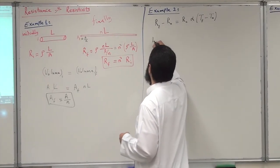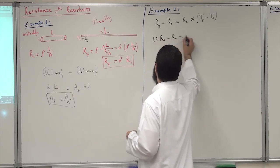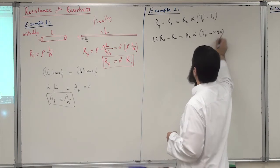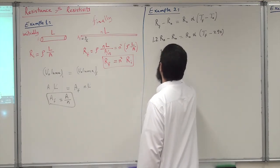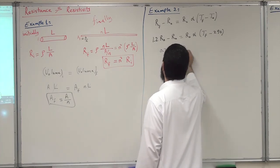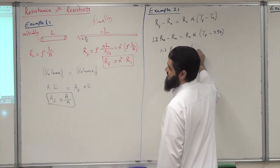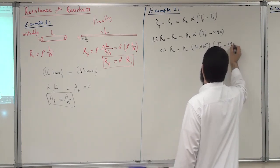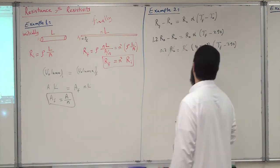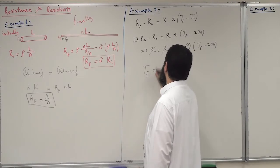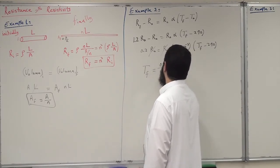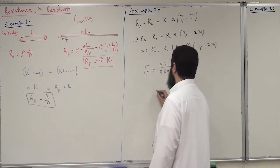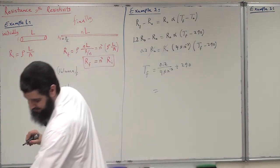Substituting: 1.2·R_zero minus R_zero equals R_zero times alpha times (T_final minus 290). This gives 0.2·R_zero equals R_zero times 4×10⁻³ per Kelvin times (T_final minus 290). R_zero cancels, so T_final equals 0.2 divided by 4×10⁻³ plus 290.